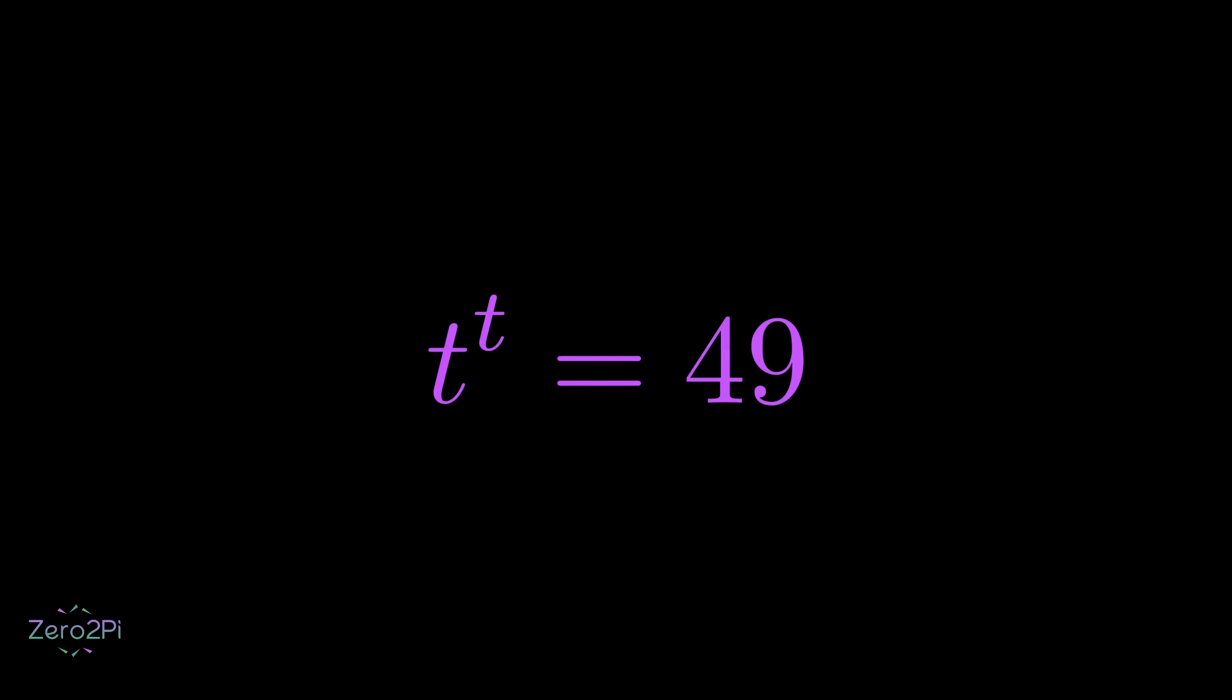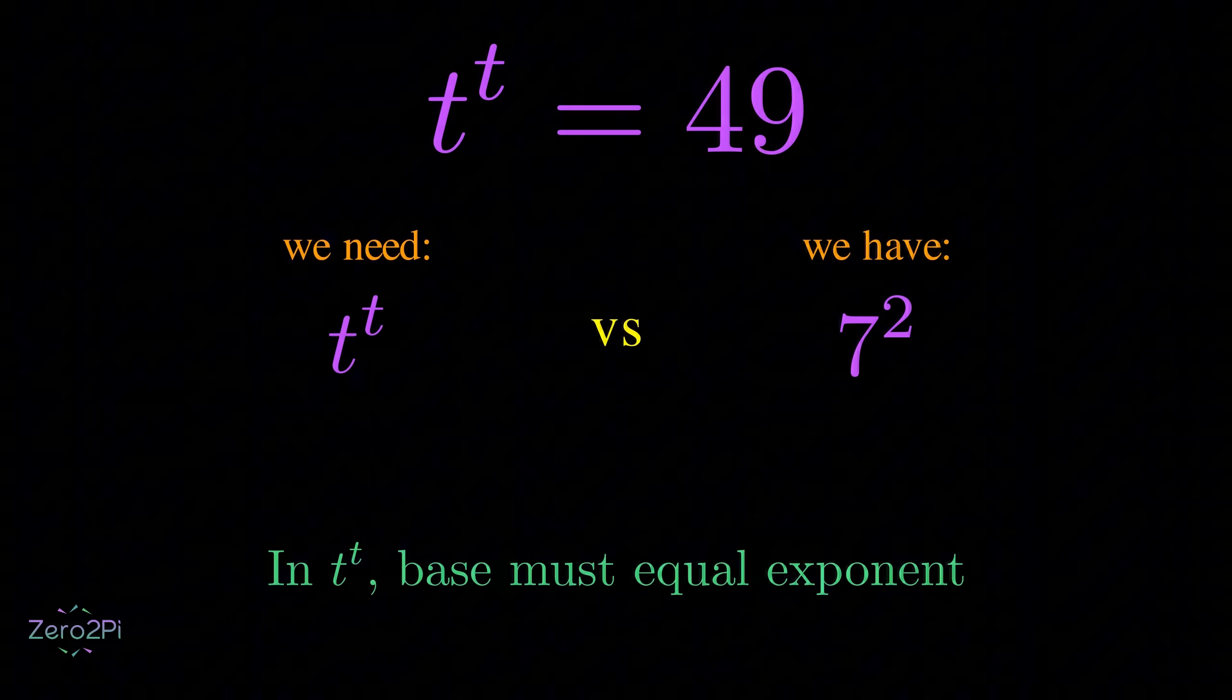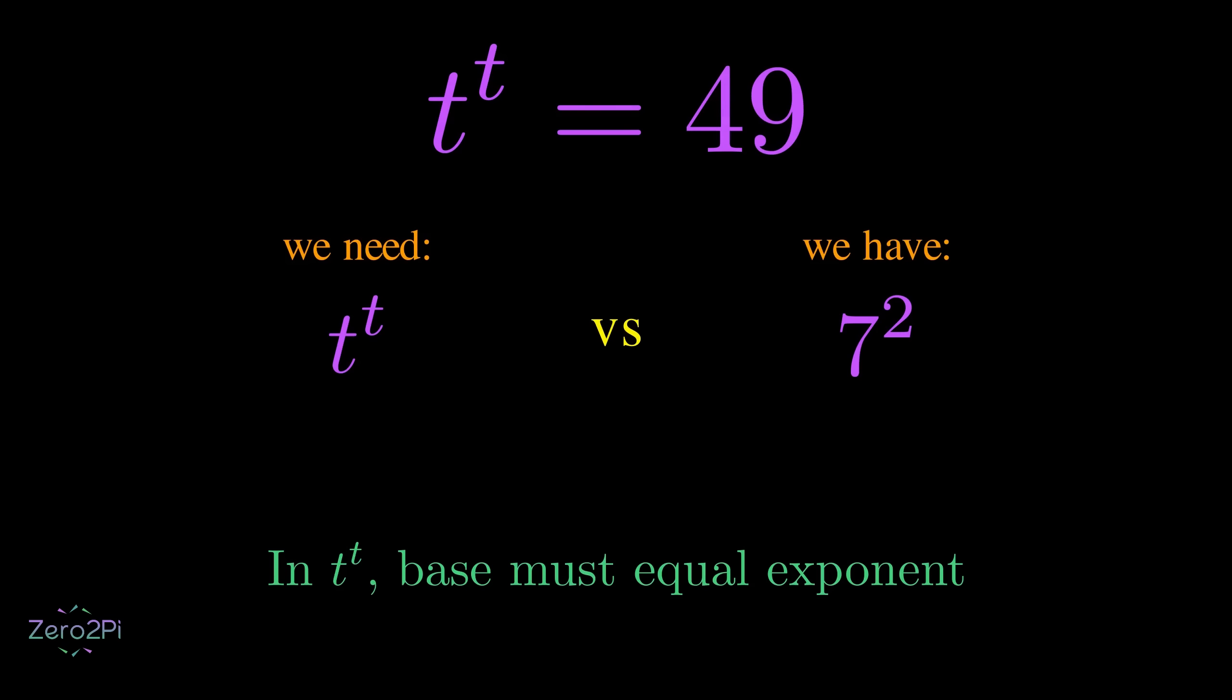Can you solve this transcendental equation directly? At first you might think, well, 49 is just 7 squared, right? But what we're looking for is t raised to the power of t. That means t is both the base and the exponent. In 7 squared, 7 is the base and 2 is the exponent. They're not the same, so that doesn't work here.